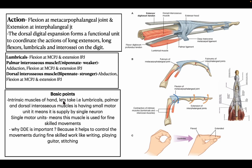All these muscles are attached to the dorsal digital expansion, which is why they all help in flexion at the metacarpophalangeal joints and extension at the interphalangeal joints. The intrinsic muscles of the hand — lumbricals, palmar interossei, and dorsal interossei — have a small motor unit, meaning each is supplied by a single neuron. This makes them suited for fine, skilled movements. Dorsal digital expansion is important because it controls movements during fine skilled work like writing, playing guitar, or stitching, producing flexion at the MCP joint and extension at the interphalangeal joints.